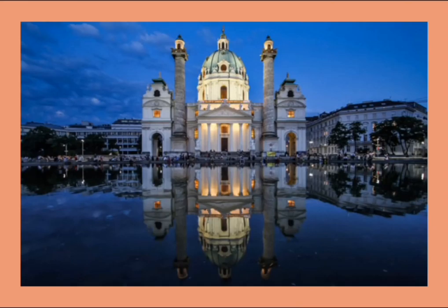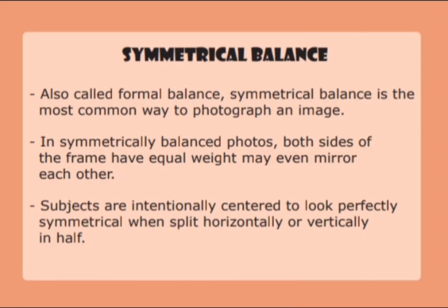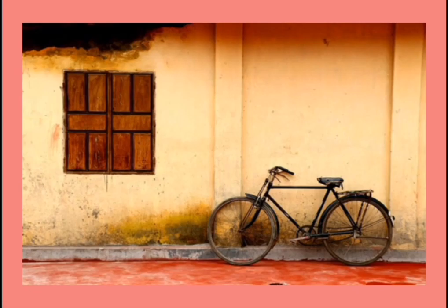The first balance is symmetrical balance. Also called formal balance, symmetrical balance is the most common way to photograph an image. In symmetrically balanced photos, both sides of the frame have equal weight and may even mirror each other. Subjects are intentionally centred to look perfectly symmetrical when split horizontally or vertically in half.